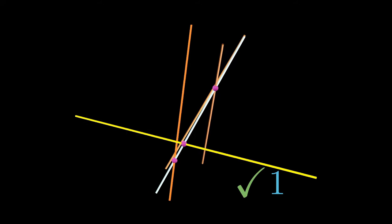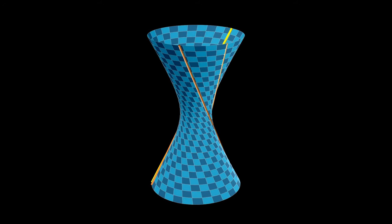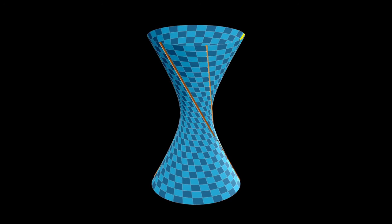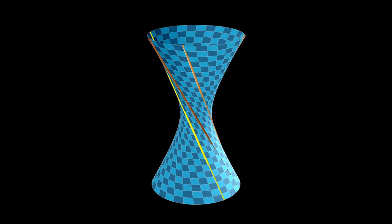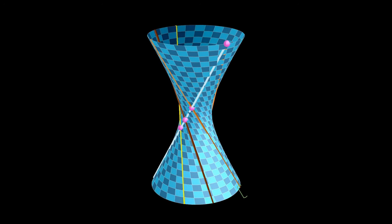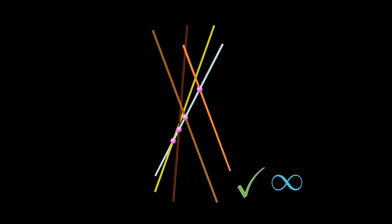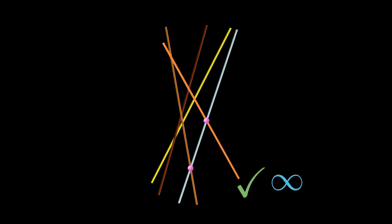Again, this is not likely when we pick our lines at random. The last situation that is not very likely is when the fourth line lays on the hyperboloid on the same ruling as the other three. And when this is the case, there are still infinitely many solutions given by the opposite ruling of the hyperboloid.